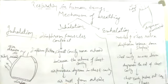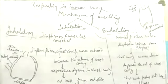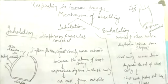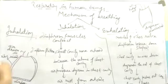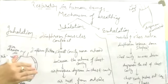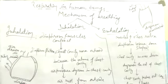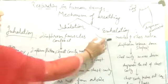The chest cavity moves upward, air pressure decreases in the chest cavity, and air rushes from the outside into the alveoli. The next process is exhalation.